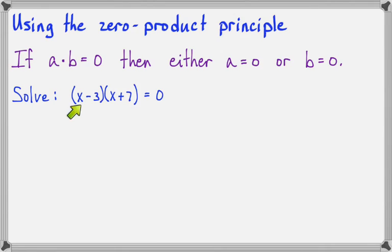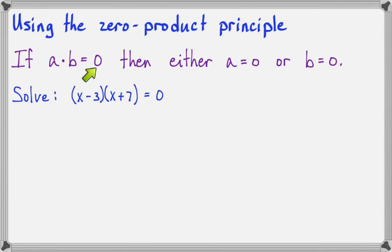Here's one. It looks like the left side has already been factored, and it's equal to zero. Now it's very important for it to be equal to zero, because we can't use the zero product principle unless we have the whole equation equal to zero.